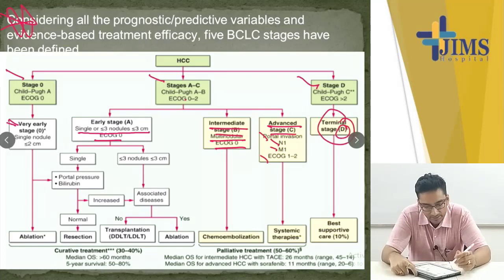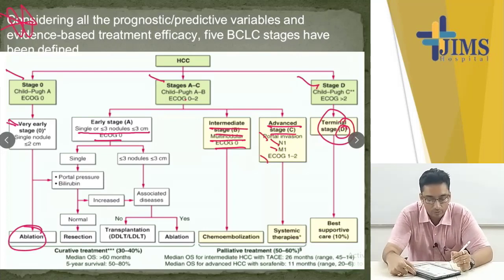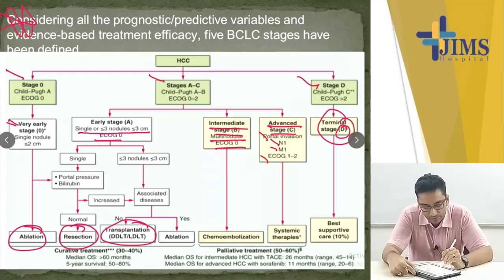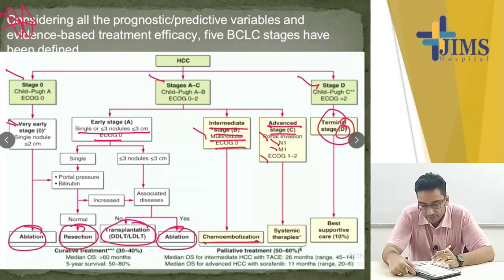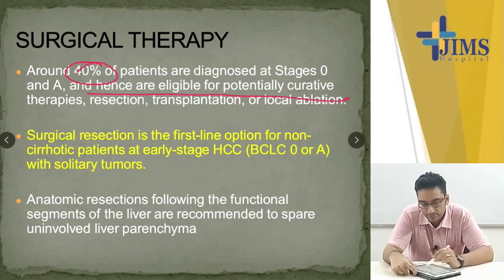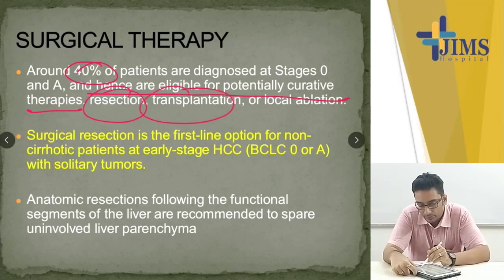Stage 0 — very early stage — can be treated with ablation. In early stage, if single with normal portal pressure and bilirubin, treat with resection. In early stage with less than 3 nodules less than 3 cm with no associated diseases, we can go for liver transplant. If there is associated disease, go for ablation. In intermediate stage B — multinodular — try chemoembolization. In advanced stages, systemic therapies are used. In terminal stage, best supportive care. Around 40% of patients are diagnosed at stage 0 and A, and hence are eligible for potential curative therapies like resection, transplantation, or local ablation.